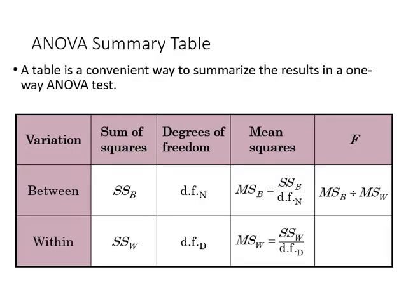We can use a table as a nice way to summarize the results of a one-way ANOVA test, where we can show the sum of squares for between and within, as well as the relative degrees of freedom, the mean squares and the final F statistic.